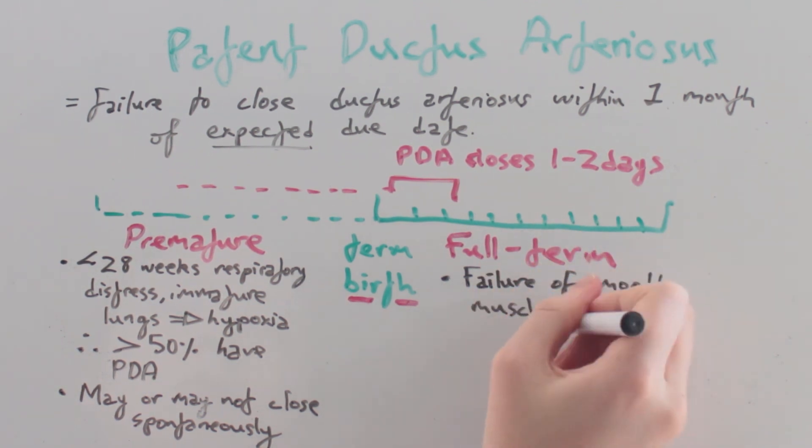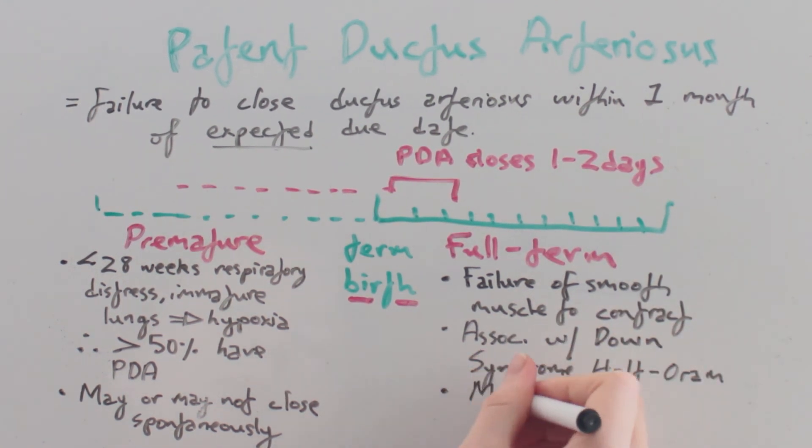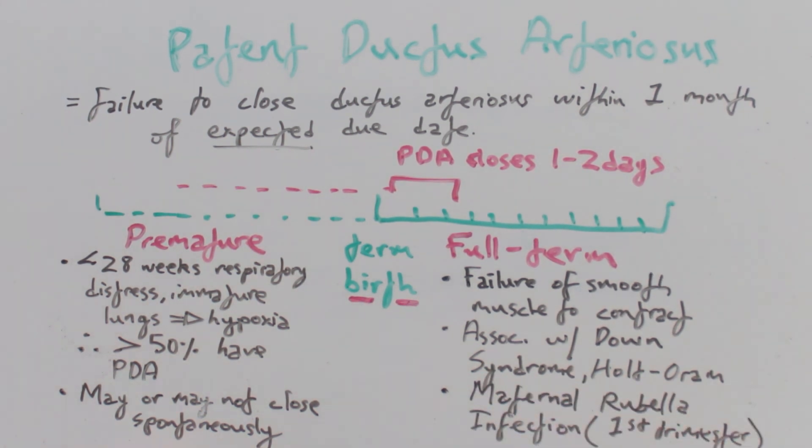This is due to a failure of smooth muscle to contract and is sometimes associated with Down syndrome or Holt-Oram syndrome. PDA can also be caused by a maternal rubella infection, particularly in the first trimester of pregnancy.